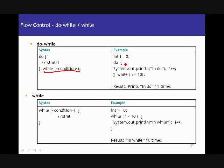In the do-while example, int i is equal to 0. Inside the do block, we have System.out.println, then i++, with the while condition i less than 10. Until this condition holds true, the statements in the do block execute. It is going to print 11 times because the condition holds true for 11 iterations.